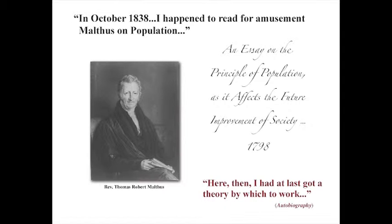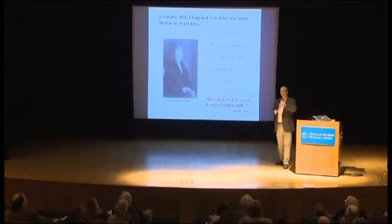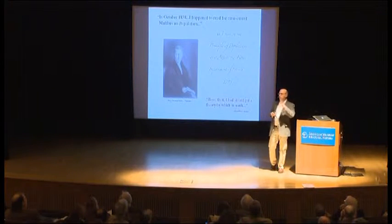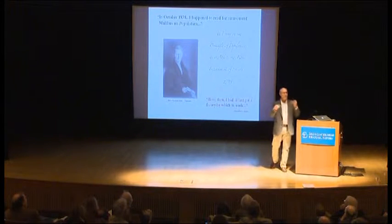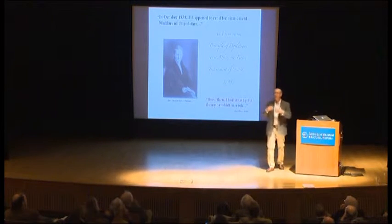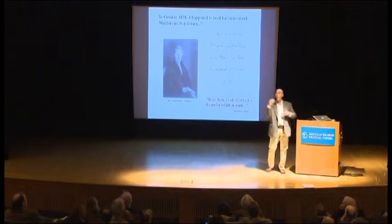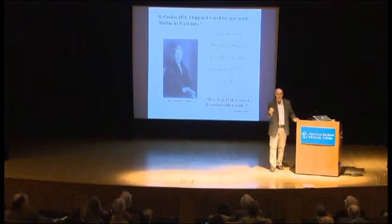As he wrote in his autobiography: 'Here then I had at last got a theory by which to work.' For the next 20 years, that was the guiding principle. All the lines of evidence he pursued were always in reference to trying to see if patterns he could discern in nature were concordant with his theory. Which is why, as you read The Origin of Species, he's constantly presenting data and patterns, then asking the reader whether this makes more sense under special creation or his theory of natural selection.